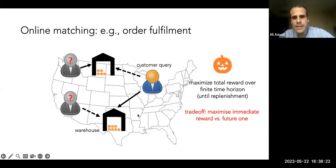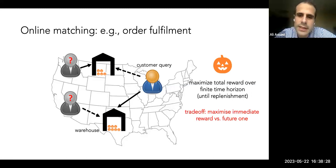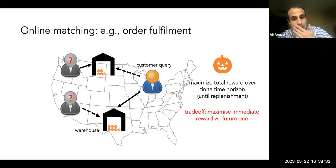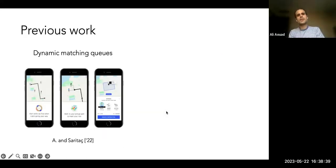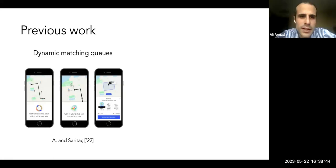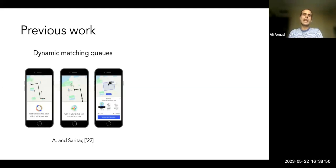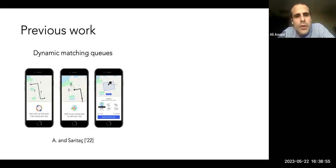In my work, I've been interested in first-order considerations that shape the stochastic aspects of this problem. If you think about services and matching platforms, the problem becomes a queuing problem, because both consumers and supply come in online — there's a stochastic process on both the demand and supply side. Both agents have some patience; they wait in the system and then abandon.